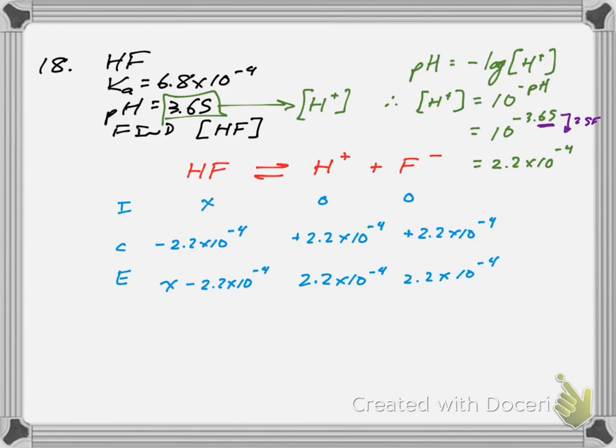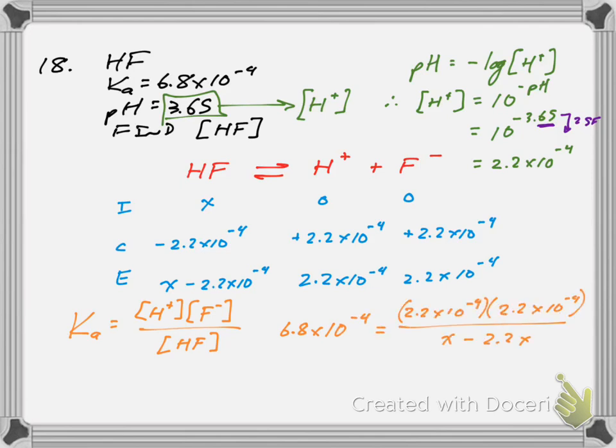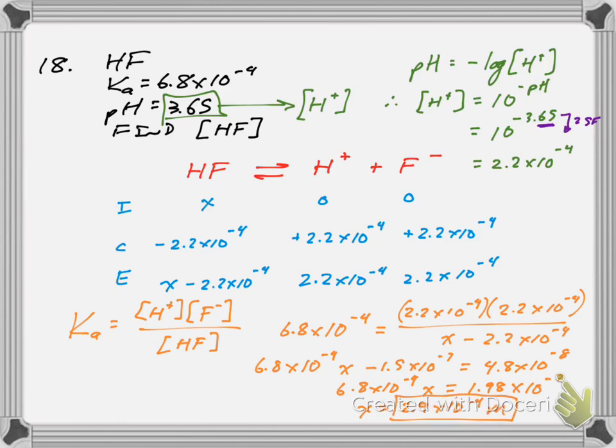So now I can write my Ka expression, which is Ka is the H plus concentration times F minus concentration over HF. That's equal to the Ka, which is given. And so now it's just a matter of algebra. And so I plug in those known equilibrium concentrations. And I do algebra. And again, you can pause in slow motion this if you need to see the algebra in slow motion. But that gives me an initial HF concentration of 2.9 times 10 to the negative 4 molar.